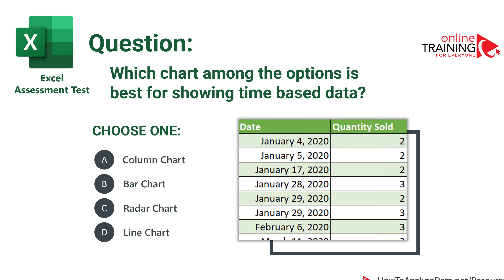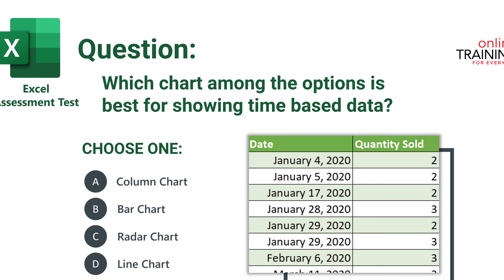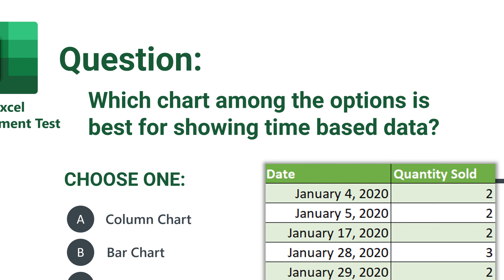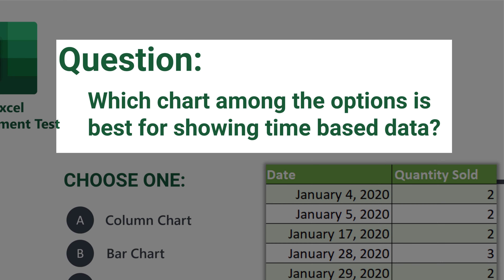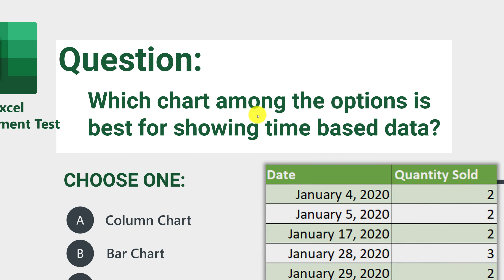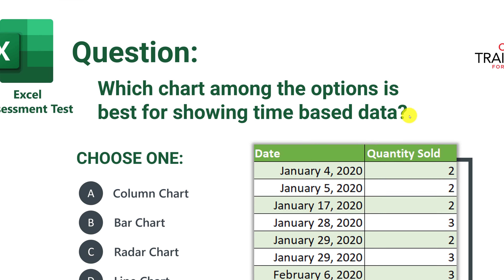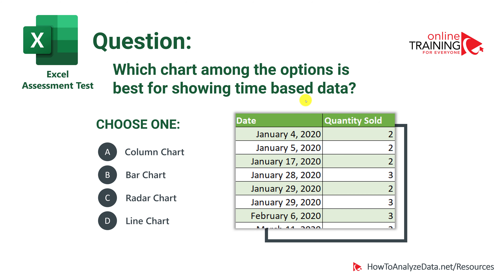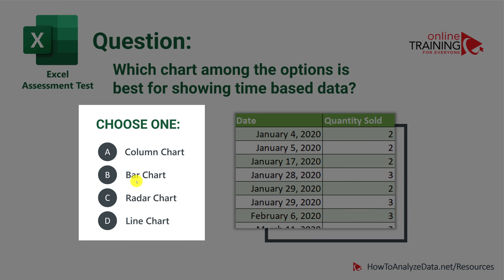Let's look at a question testing your knowledge of Microsoft Excel charts and graphs. Which chart among the options is best for showing time-based data? Pay attention to every detail in the question — the key phrase here is 'time-based data'. The four choices are: column chart, bar chart, radar chart, and line chart. Which one would you choose?